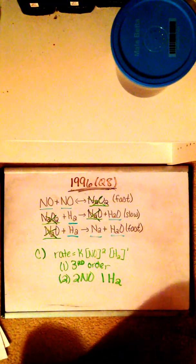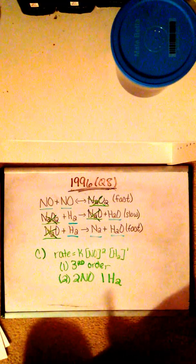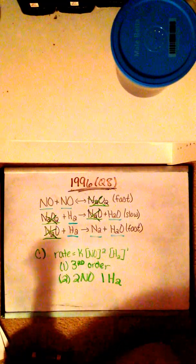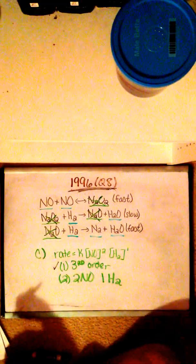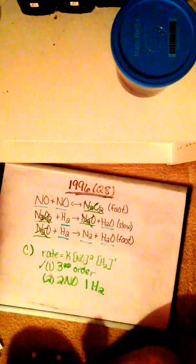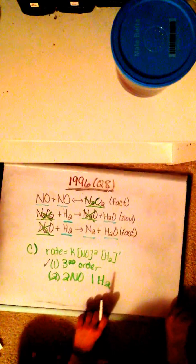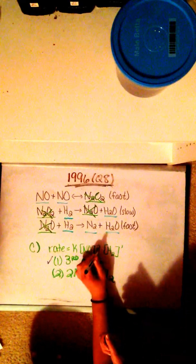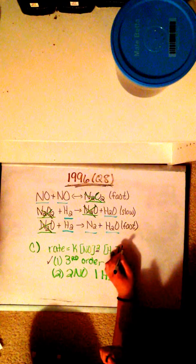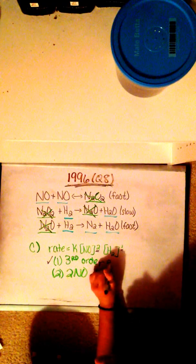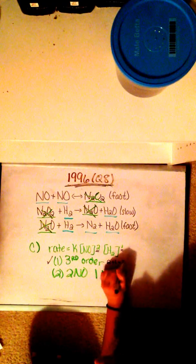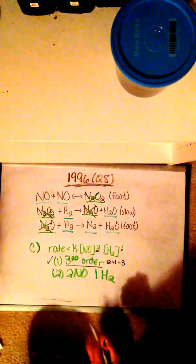Are conclusions 1 and 2 correct? So let's start with conclusion 1. Conclusion 1 is correct. We can tell because when we look at the exponents in our rate equation, we can see that NO is raised to the 2 and H2 is raised to the first. So 2 plus 1 equals 3. So that's where we get third order from.